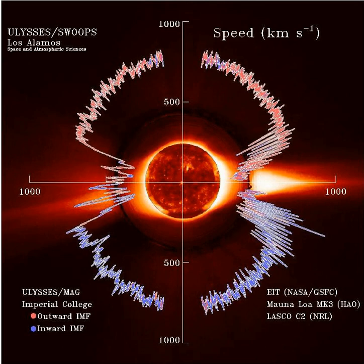Where the solar wind intersects with a planet that has a well-developed magnetic field, the particles are deflected by the Lorentz force. This region, known as the magnetosphere, causes the particles to travel around the planet rather than bombarding the atmosphere or surface. The magnetosphere is roughly shaped like a hemisphere on the side facing the sun, then is drawn out in a long wake on the opposite side. The boundary of this region is called the magnetopause, and some particles are able to penetrate the magnetosphere through this region by partial reconnection of the magnetic field lines. The solar wind is responsible for the overall shape of Earth's magnetosphere.